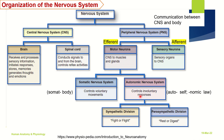The involuntary responses are further classified into the sympathetic division, responsible for fight-or-flight responses, and the parasympathetic division, responsible for rest-and-digest responses. This can be further classified into the enteric nervous system, which is nothing but the brain of the gut.